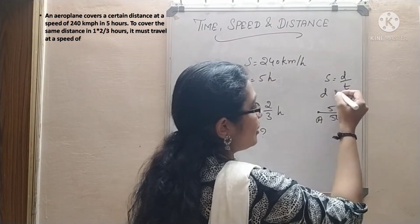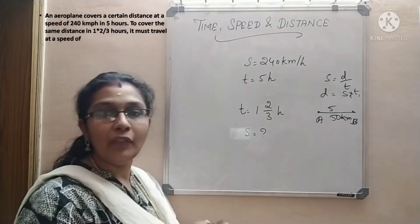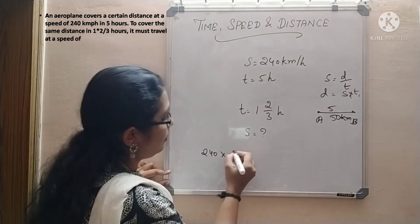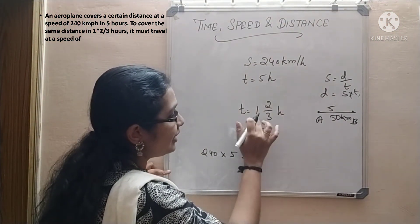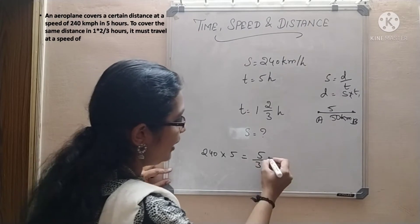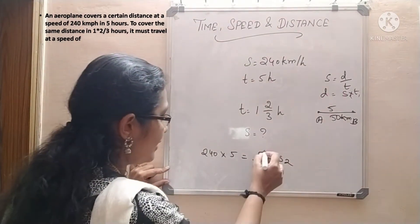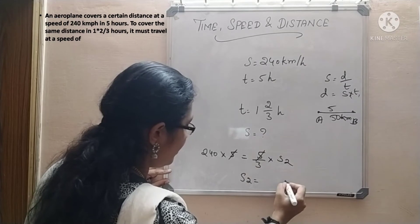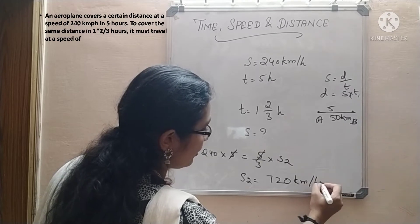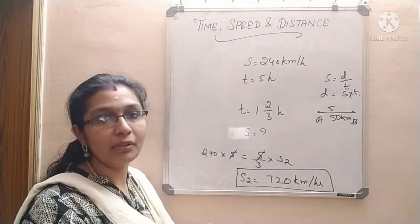Since distance is the same, we know speed equals distance by time, so distance equals speed × time. Let us equate both distances: S1 × T1 = S2 × T2. So 240 × 5 = S2 × (5/3). Therefore S2 = 240 × 3 = 720. So 720 kilometer per hour is the speed when it takes 1⅔ hours to cover the same distance.